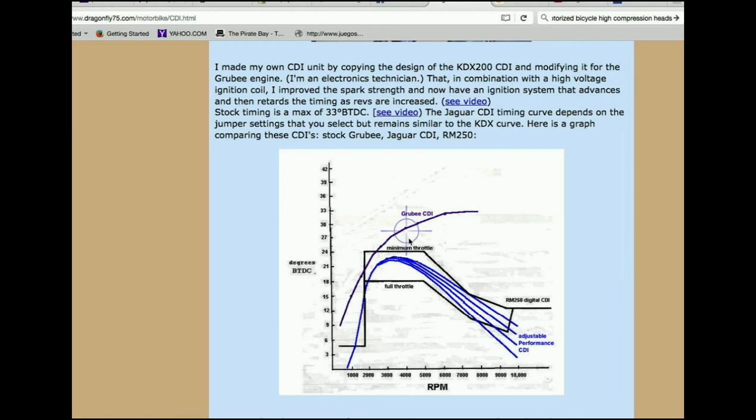So this blue graph right here is the variable timing with the performance CDI that I sell for the Groovy engine. And this black one is a CDI curve for a motocross bike, a Suzuki 250. This is the max, and this is the minimum, and then it comes down.